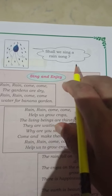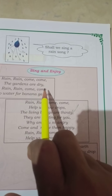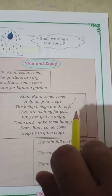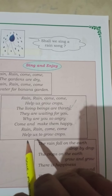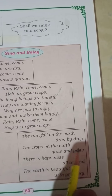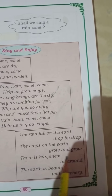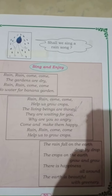Next, shall we sing a rain song? When there is no rain, the gardens are dry. Rain, rain, come, come — no water for the banana garden. Rain, rain, come, come — help us grow crops. The living beings are thirsty; they are waiting for you. Why are you so angry? Come and make them happy. Rain, rain, come, come — help us to grow crops. The rain falls on the earth drop by drop. The crops on the earth grow and grow. There is happiness all around. The earth is beautiful with greenery. Sing and enjoy this rain song, children.